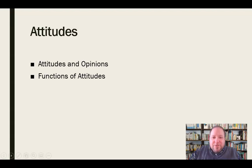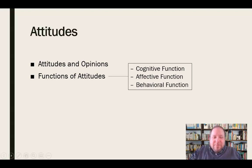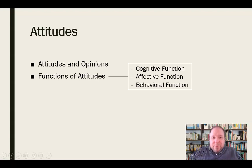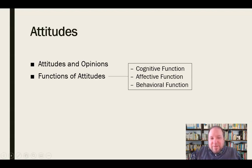We also need to understand the functions of attitudes — what attitudes do. There are three basic functions: cognitive, affective, and behavioral. Cognitively, attitudes affect how we think, and how we think affects our attitudes — they're interconnected. Our attitudes affect how we process information, how we view things, and vice versa. The affective function is that attitudes affect our emotional reactions — how upset we get about something is based on our attitude toward it. Some things we're ultra-concerned about, so we get more emotional; others we're less interested in, so we don't get as worked up. And behaviorally, our attitudes drive our behaviors as well.